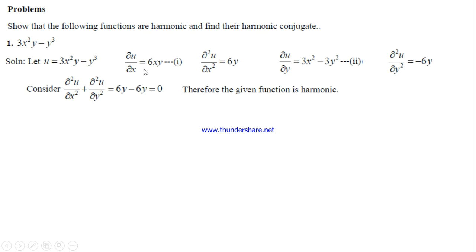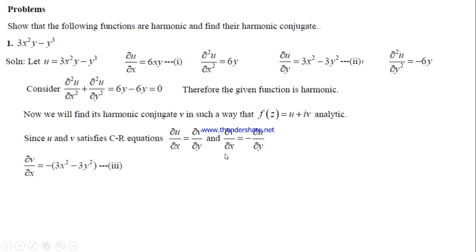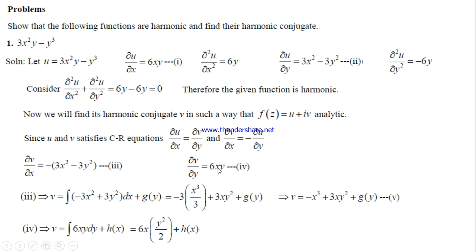Since we know ∂u/∂x and ∂u/∂y, we use the CR equations to write ∂v/∂x = -(3x² - 3y²) and ∂v/∂y = 6xy. Integrating ∂v/∂x with respect to x, treating y as constant, gives -x³ + 3xy² + g(y). Integrating ∂v/∂y with respect to y gives 3xy² + h(x).